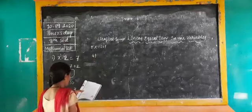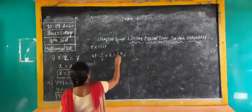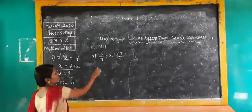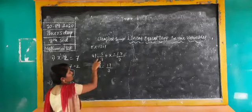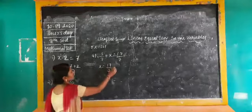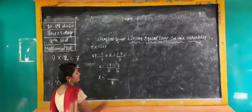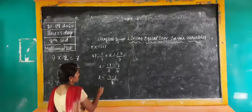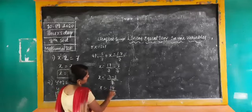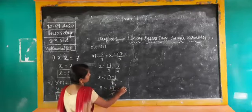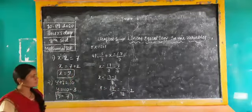Fourth question — they have given a fraction: 3/7 plus x is equal to 17/7. Keep x aside. x equals 17/7 minus 3/7. Since the denominators are the same, just subtract the numerators: 17 minus 3 gives 14. So x equals 14/7, which simplifies to 2. x value is 2.